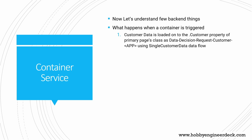When a container is triggered, the service activity gets executed. The first main thing is that the customer data has to be loaded. The customer data is loaded onto the dot customer property of the primary page class as a data decision request customer hyphen app, using the single customer data data flow. Basically, whether it is inbound or outbound, Pega considers that as a decision request. For that decision request we have a class called data decision request customer hyphen application name — in our case it is CDH — so: data decision request customer CDH. This is the primary context of everything.